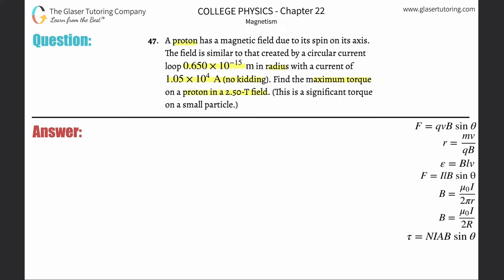Basically, anytime you start talking about torque, current, and magnetic field, you definitely want to consider this formula: that the torque on a current-carrying loop, in this case a proton that is creating a current, is equal to...